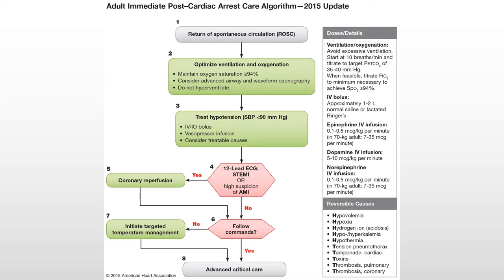We also want to consider treatable causes. Was this caused by acute coronary syndrome — a plaque rupture in one of the coronary arteries? Is this from a massive pulmonary embolism? Whatever the cause, we want to figure it out and treat it. To check for acute coronary syndrome, we would do a 12-lead ECG. If the patient has a STEMI or high suspicion of an acute MI, we would send them to the cath lab for coronary reperfusion.